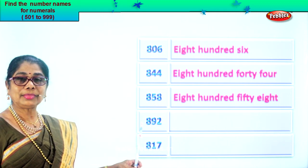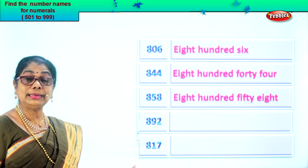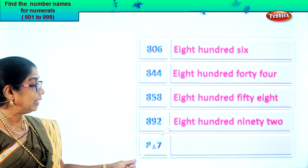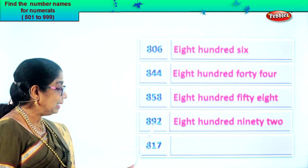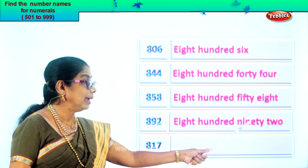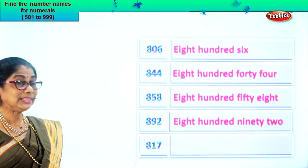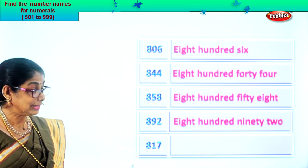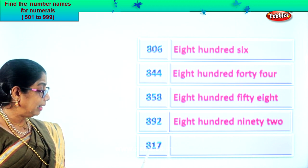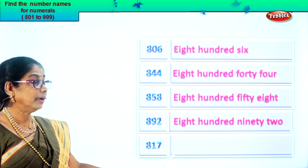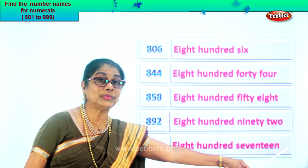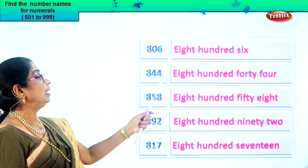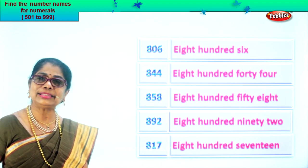Let's look at this number: eight, nine, two. Two in the ones place, nine in the tens and eight in the hundreds place. So we read it as eight hundred ninety-two. First we write eight hundred, then we write ninety-two. Eight hundred ninety-two. Let's look at the last numeral — seven in the ones place, one in the tens and eight in the hundreds place. We read the numeral as eight hundred seventeen. So we write first eight hundred, then we write seventeen. Very good.